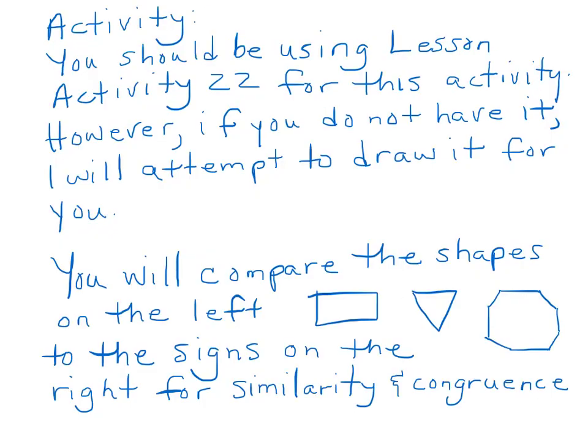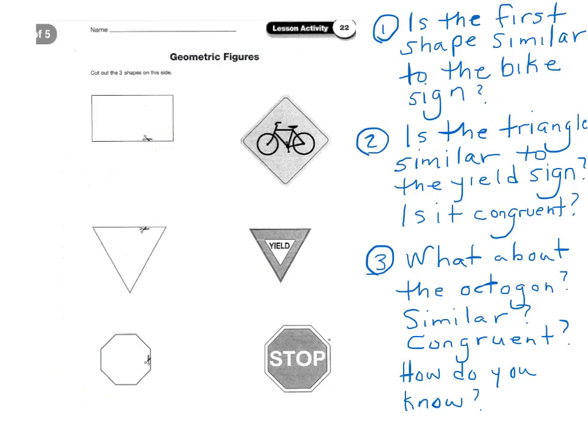All right, so on this activity, you can use lesson activity 22. But if you don't have it, I'm going to attempt to draw it, and I want you to compare the shapes on the left to the signs on the right for similarity and congruence. So, these will be the shapes, but let's take a look at the next slide. Okay. What I did was I inserted the lesson activity 22 picture, and this will help you.